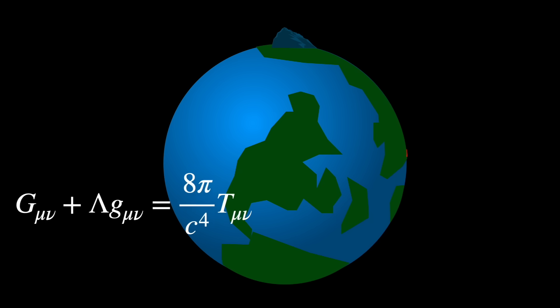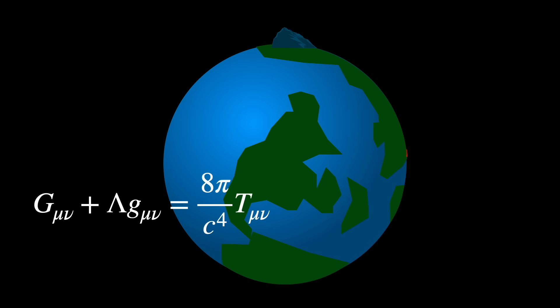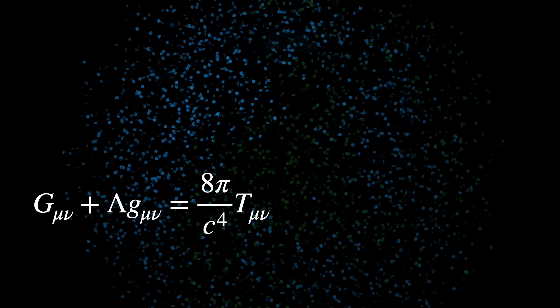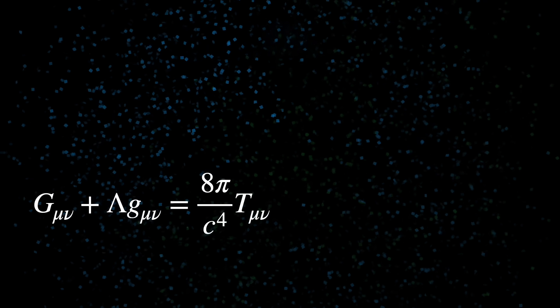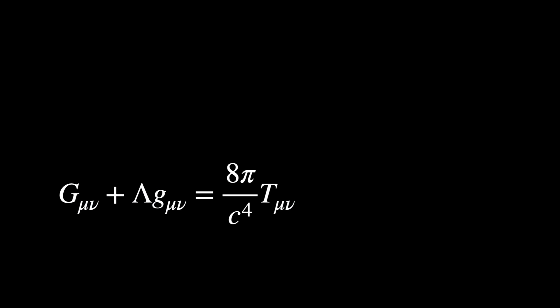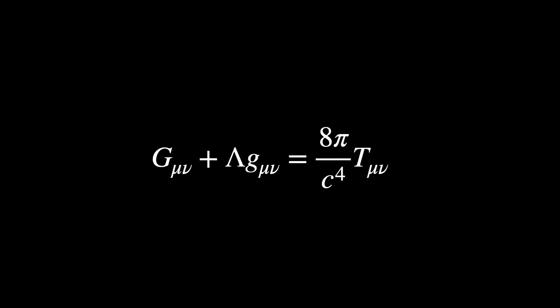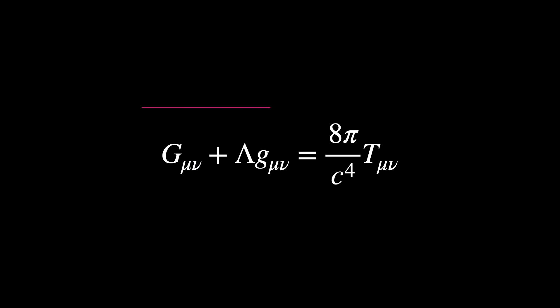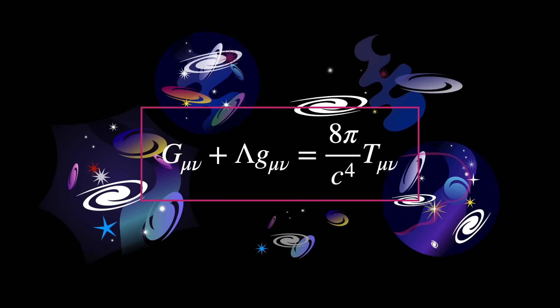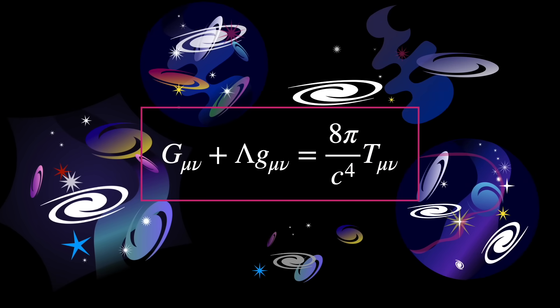Einstein's equations describe how space and time themselves curve in response to matter and energy. But here's the weird thing: even if we remove all matter and energy, these equations still have solutions. Theoretically, these equations could describe entire universes — not just one, but infinitely many.